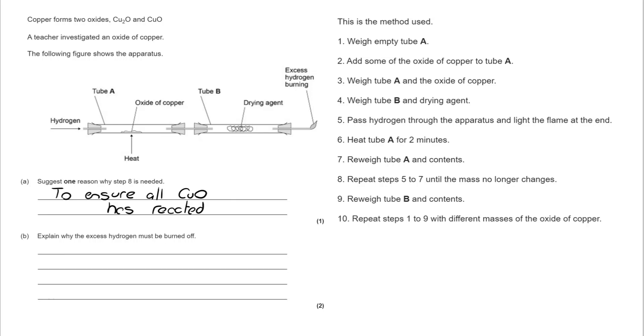Why must the excess hydrogen be burned off? You can see we're doing that in step 5, lighting the flame at the end. The fact we're lighting the hydrogen helps us get the answer. We don't want the hydrogen to escape to the surroundings because it's a flammable gas.